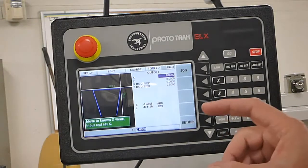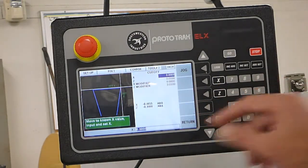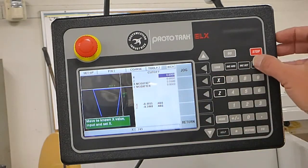After measuring our part that we just cut with the grooving tool, it measured 0.745, absolute set.